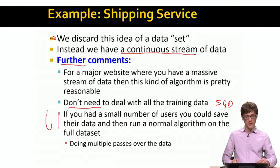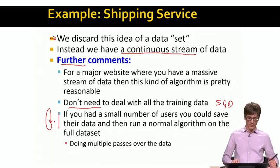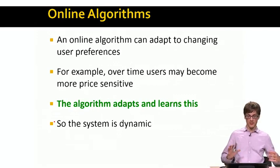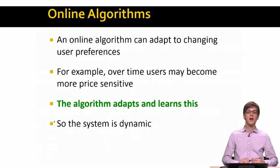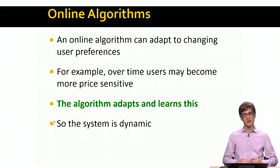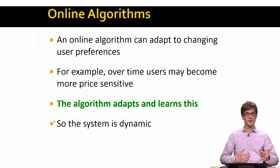If we don't have a lot of data, we can run stochastic gradient descent while traversing over the same set of data multiple times in multiple rounds until the algorithm converges. To summarize: online algorithms can adapt to changing user preferences — for example, over time users may become more price sensitive. This means algorithms can adapt to data and learn these changes. The model becomes dynamic, and this is the side benefit of training our support vector machine using stochastic gradient descent — whenever a new data point comes in, we classify it, learn the class, and slightly update the model.